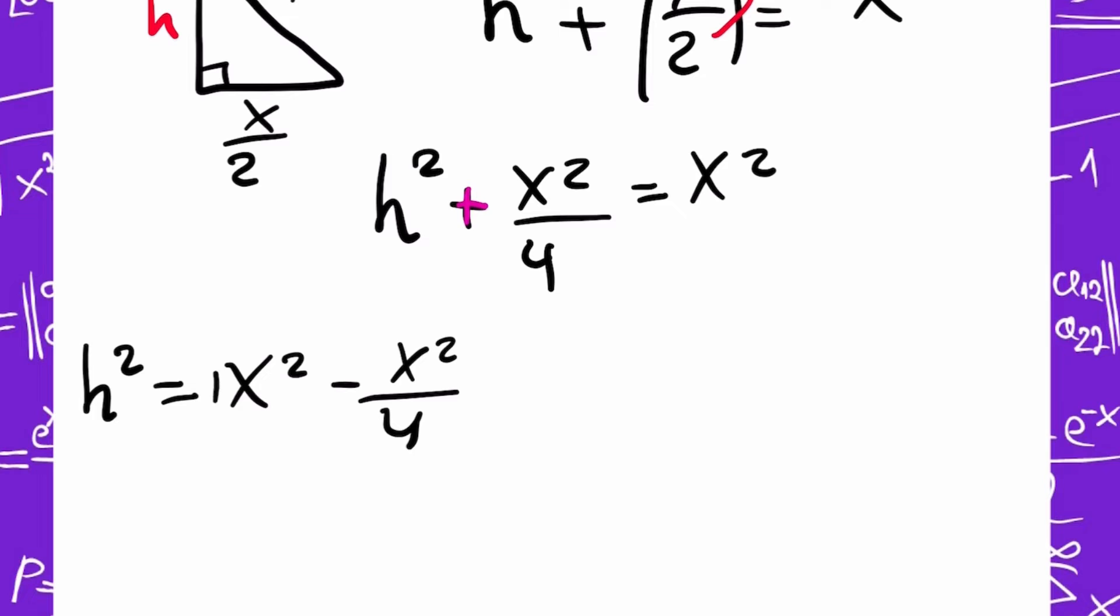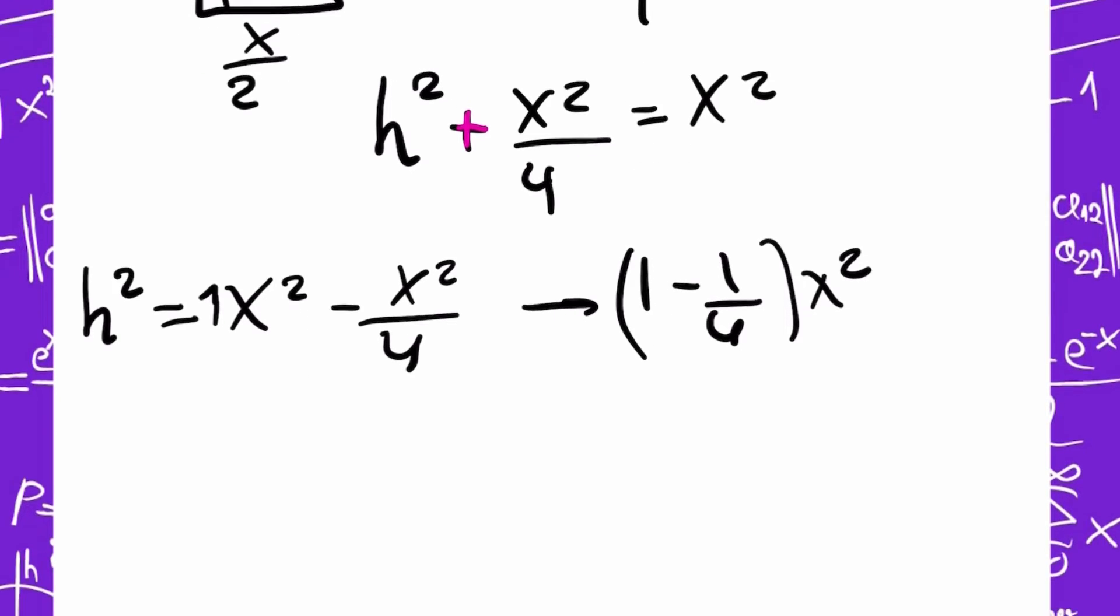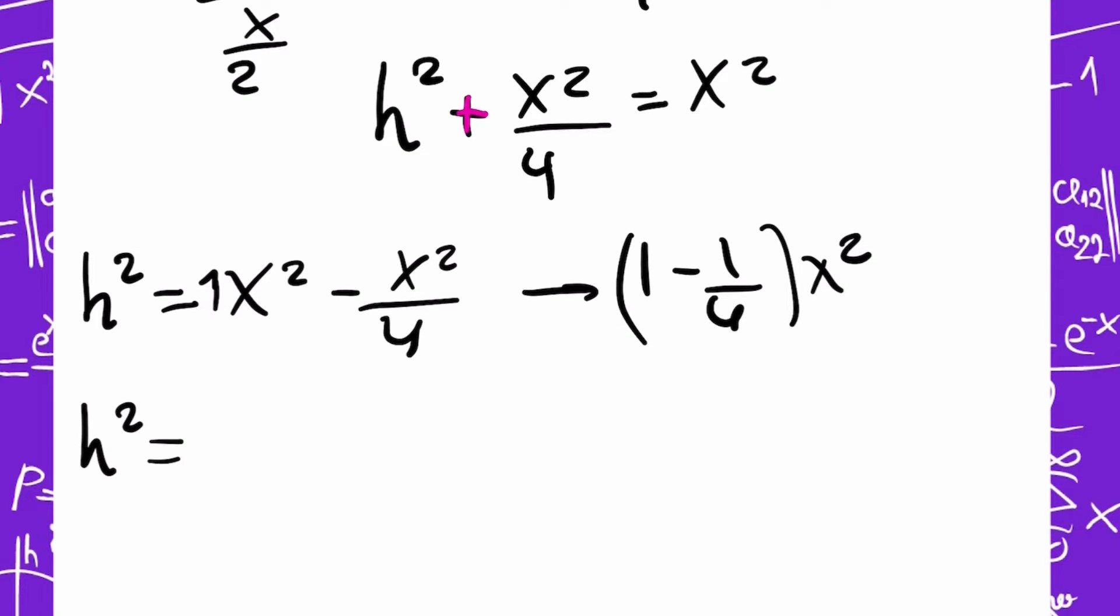And this is an operation that I can do, because they are all squared. I can put in my calculator, or common factor, 1 minus 1 divided 4, X squared. 1 minus 1 divided 4 is, I'm going to put H squared equals, it's 3 divided 4, X squared.